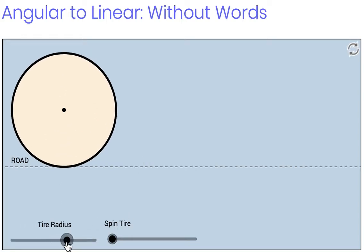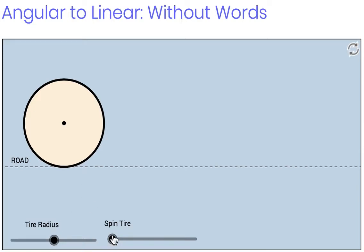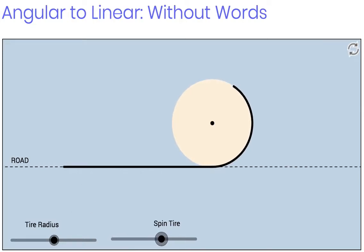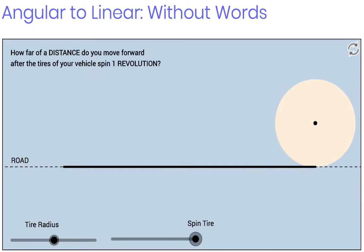You can make the tire as big or as small as you want, but regardless, you spin that tire. Moving the slider will spin that tire once, and hopefully students will be able to tell me that...